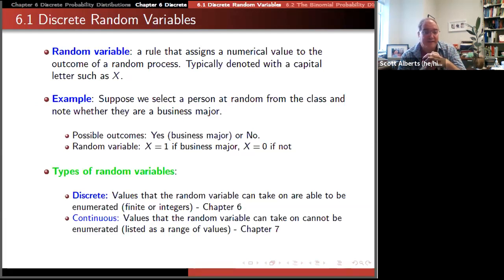discrete meaning it's listable, as opposed to continuous, which means there's decimal places, that it can take any value in a range. A discrete one is one where there's a fixed number.